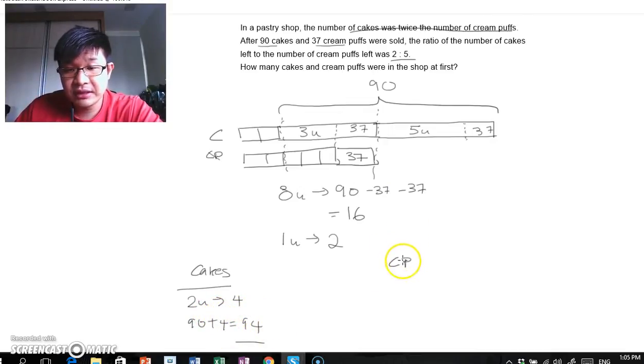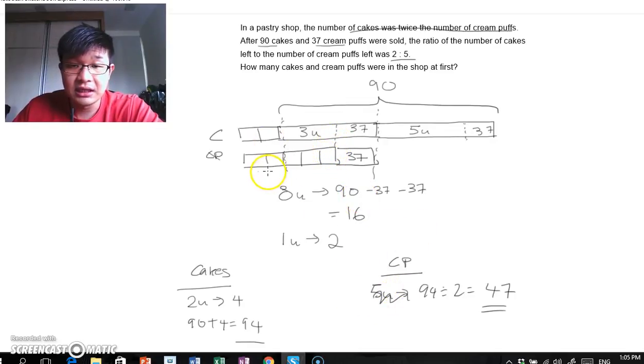As for the cream puffs, well, it's actually 1, 2, 3, 4, 5 units. So 5 units would therefore be... Actually, we don't need this. It's basically 94 divided by 2, right? So let's go this way. 94 divided by 2 will be 47. It's a lot easier. Of course, we could continue with these 5 units and then after that, you add on to the 37. You will get back to the same answer.